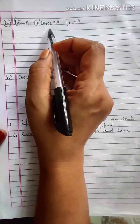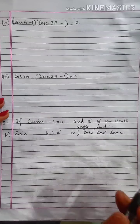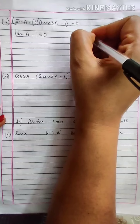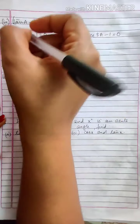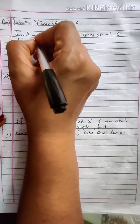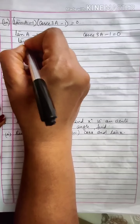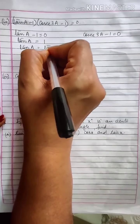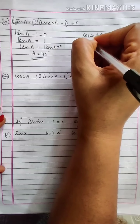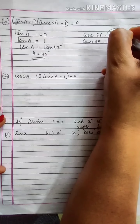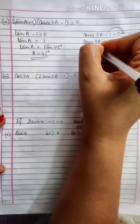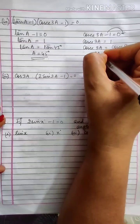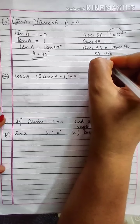Next: (tan A minus 1)(cos 3A minus 1) equal to 0. Again you get 2 equations. From tan A minus 1 equal to 0, transposing gives tan A equal to 1; the angle for which tan is 1 is tan 45, so A equals 45 degrees. For cos 3A minus 1 equal to 0, cos 3A equals 1 which is cos 90, so 3A equals 90 degrees and A equals 30 degrees.